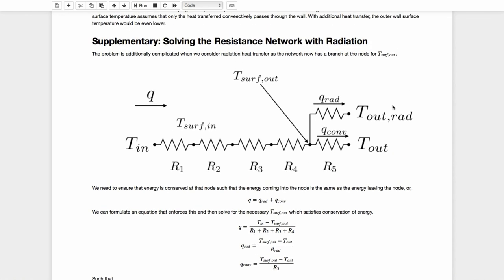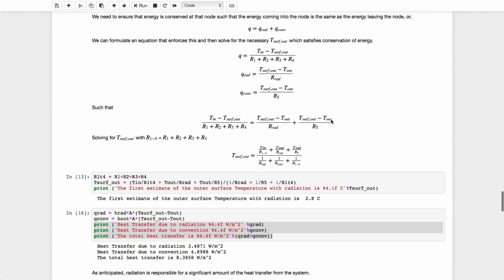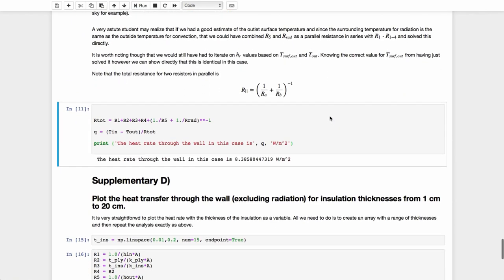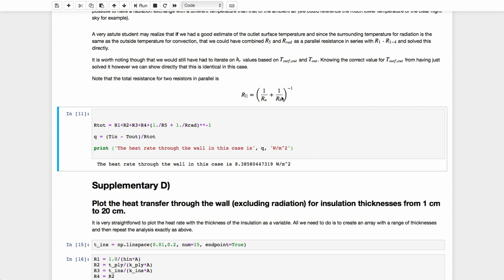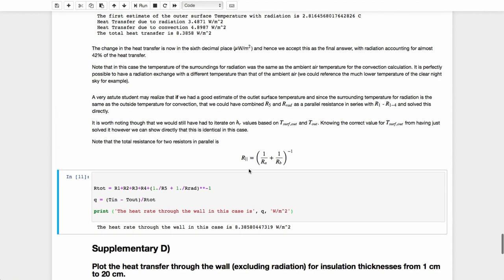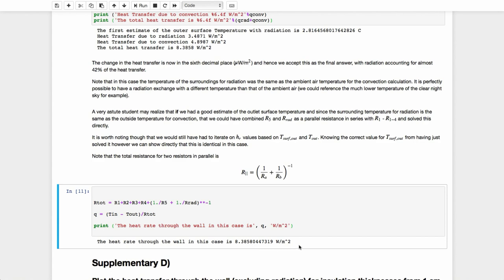You may have noticed that those two resistors, because our temperature of the outside, the temperature reference for radiation, the temperature of the surroundings in this case is the same as the outside temperature. We could have taken these to be two resistors in parallel and combine them into one network. If we knew this outer surface temperature, we could do that exactly, because we need that this temperature here in order to estimate this heat transfer coefficient for radiation. And so we would still have to iterate if we did that. But of course, now that we know that estimate, we could see that it's identically the same. If we combine those two resistors in parallel, the convection and the radiation resistances and add those to our series resistances, we'll get exactly the same heat rate as we had above, 8.3858 watts per meter squared.